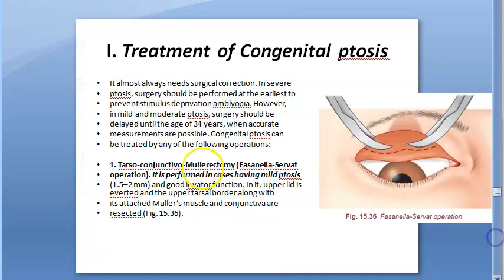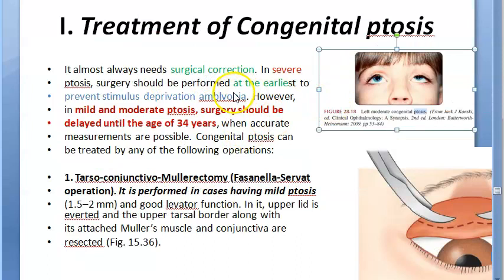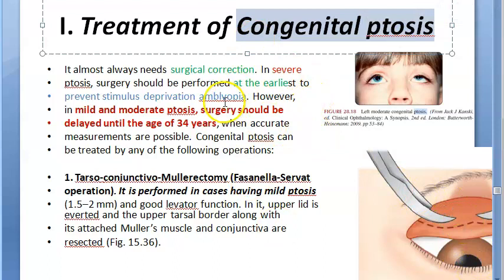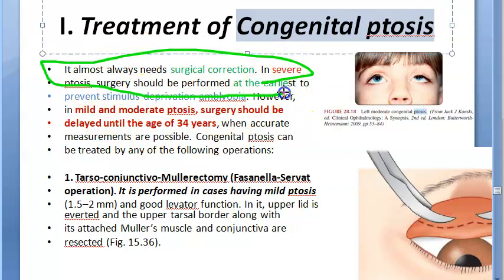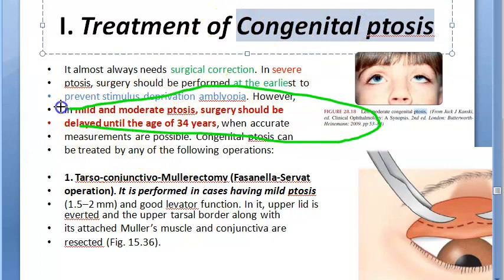For the treatment of congenital ptosis: if it is severe, surgical correction must be done at the earliest, because if the child cannot see in one eye, that part of the brain won't develop properly and the child will not learn to use that eye — leading to amblyopia. So if it is severe ptosis, earliest surgical correction should be done.